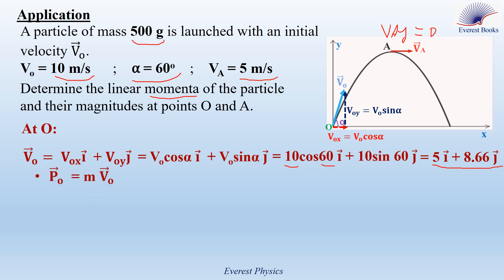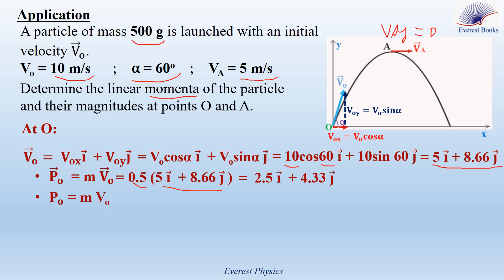Using the formula P_O equals M times V_O, substitute M equals 0.5 and V_O equals 5i plus 8.66j. Finally, we get P_O vector equals 2.5i plus 4.33j kilogram meters per second. To determine the magnitude of the linear momentum at point O, multiply the mass by the speed: P_O equals M·V₀ equals 0.5 times 10 equals 5 kilogram meters per second. Note: the magnitude can also be calculated as the norm of the vector 2.5i plus 4.33j, which gives the radical of 2.5 squared plus 4.33 squared.